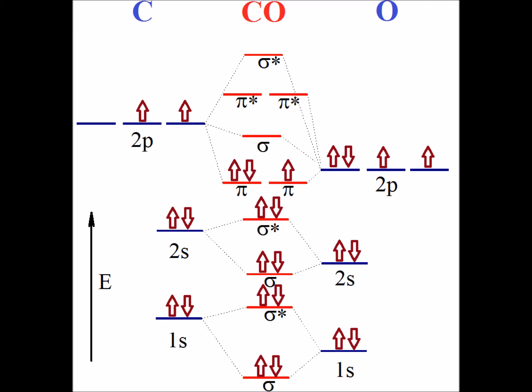Once we have put all 14 electrons in, we know that we have the ground state for carbon monoxide.